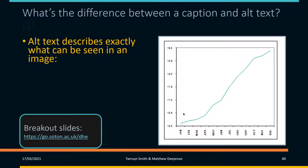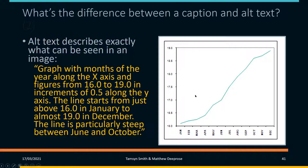Where we were talking about the alternate text: here is an example. The graph has months of the year along one axis, and figures going from 16 to 19 in increments of 0.5 along the Y axis. The line starts just above 16 in January to almost 19 in December, and there's a particularly steep increase around June and October. Some of you noted it looks like a cumulative graph, which was a really good observation.